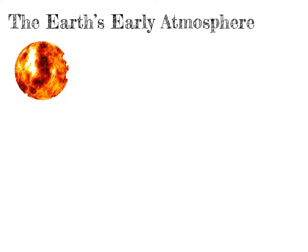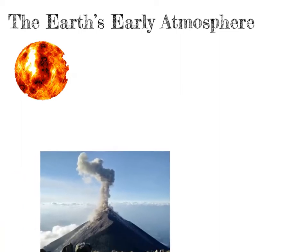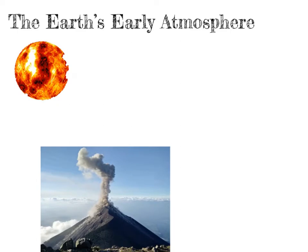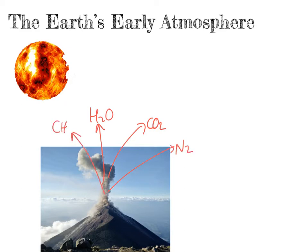Back when the Earth first formed, it was a very, very hot ball of molten rock — extremely high temperatures. As the surface of the Earth began to cool, we believe the Earth was covered in volcanoes. These provided the gases that formed the early atmosphere: volcanoes were producing gases such as carbon dioxide, lots of water vapour, some nitrogen, likely some methane, and probably some ammonia. You need to be aware that there was a lot of carbon dioxide in the Earth's early atmosphere, much more than there is today.